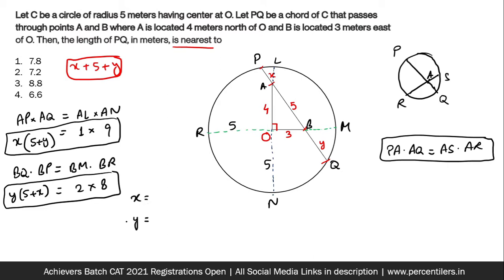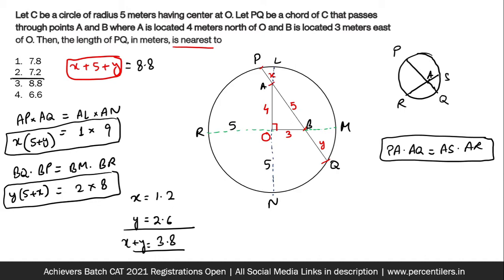Solving the quadratic equation — which is just a clerical job — gives x = 1.2 and y = 2.6, so x + y = 3.8. We needed x + y + 5, which is 8.8. This was the only difficult question; bad numbers made it look difficult, but the approach was straightforward.